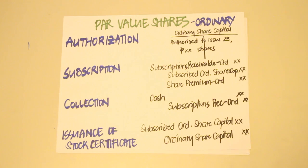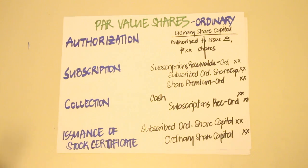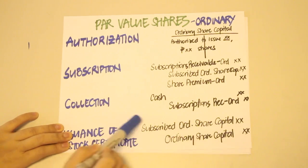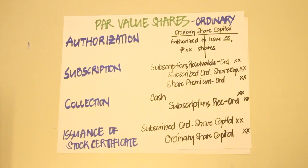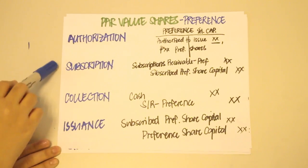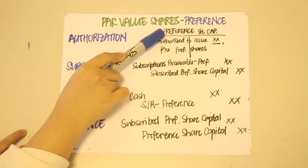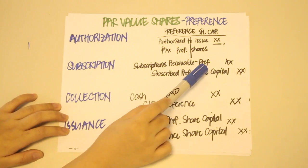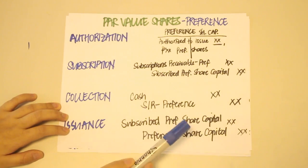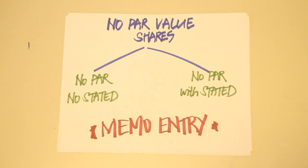Some investors may pay the full amount immediately, so you do not have to go through the subscription and collection steps. The entry in this case is simply to debit Cash and credit Ordinary Share Capital. For preference shares, the entries are the same — the only difference is the label. You simply replace the word 'ordinary' with 'preference' throughout all the relevant accounts.